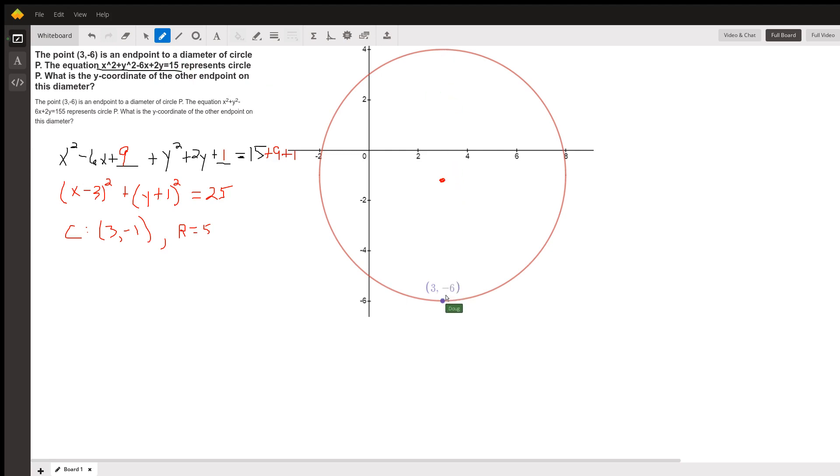So we really only have to find the y-coordinate. That means the x-coordinate of this point up here has to be 3. And let me jot down the fact that this is 3 and minus 1.